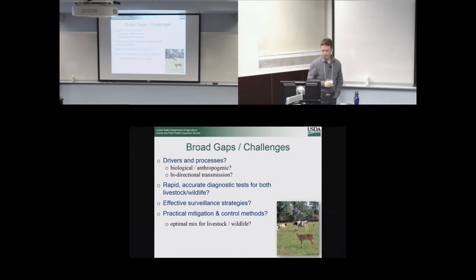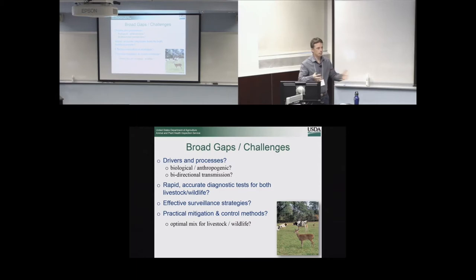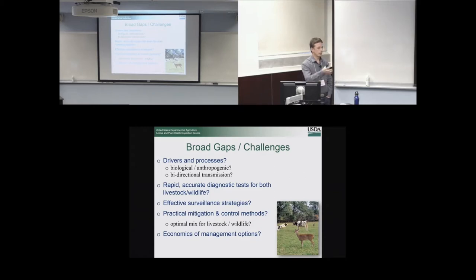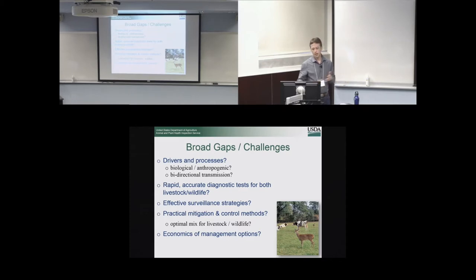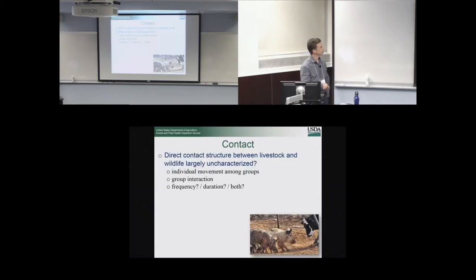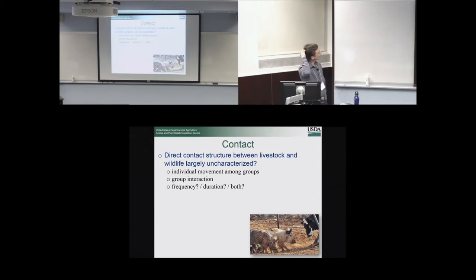Practical mitigation and control methods — can we identify an optimal mix for both the livestock and the wildlife side? Where do you devote your resources: is it on the livestock side, the wildlife side, or some mix of both? Economics and management options are a really key piece. You can develop a vaccine for some of these, but if it's not economically feasible to distribute it in wildlife then you're not going to use it. We need to think about the economics before addressing mitigation options.